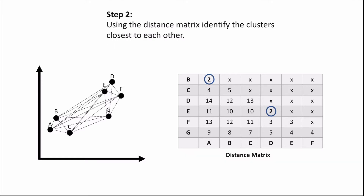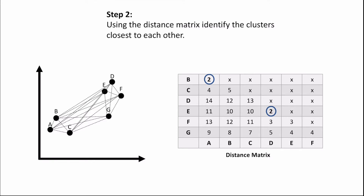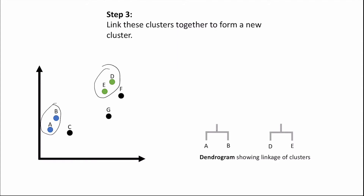For step two, we use the distance matrix to identify the clusters closest to each other. In this case, those are clusters A and B, and clusters D and E. We then link these clusters together to form a new cluster. Clusters A and B have been linked together, and the same for D and E. We record this linkage in what's called a dendrogram.